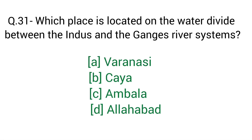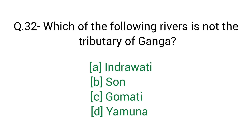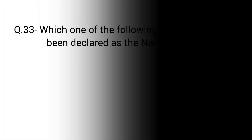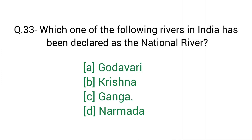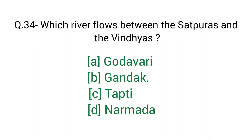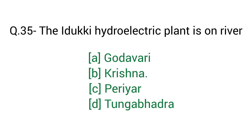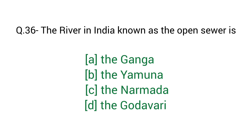Question number 31: Which place is located on the water divide between the Indus and the Ganga river systems? Right answer option C: Ambala. Question number 32: Which of the following rivers is not a tributary of Ganga? Right answer option A: Indravati river. Question number 33: Which one of the following rivers in India has been declared the national river? Right answer option C: Ganga. Question number 34: Which river flows between the Satpuras and the Vindhyas? Right answer option D: Narmada river. Question number 35: The Idukki hydraulic plant is on river — right answer option C: Periyar river. Question number 36: The river in India known as the open sewer is — right answer option B: the Yamuna.